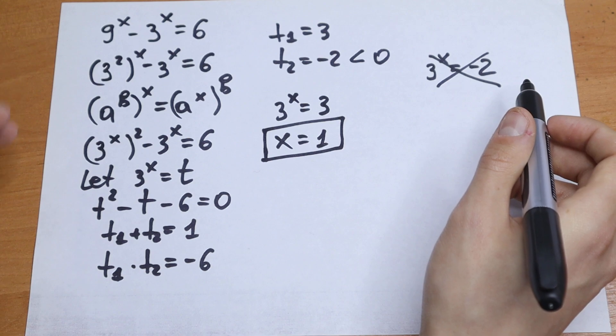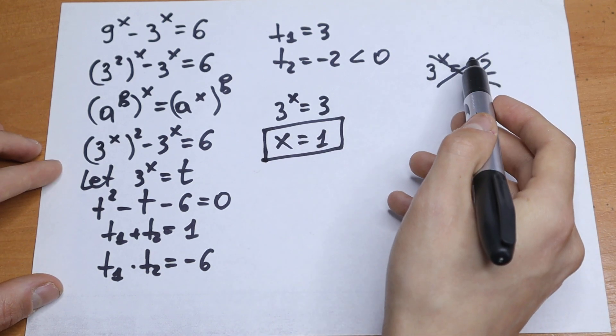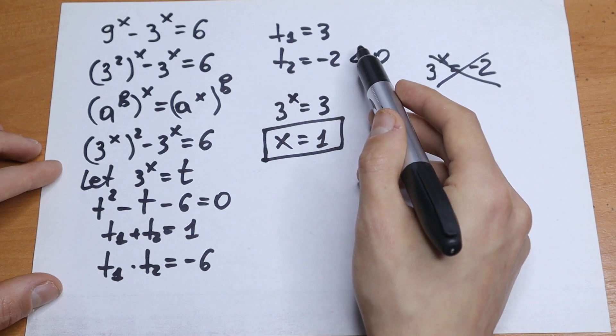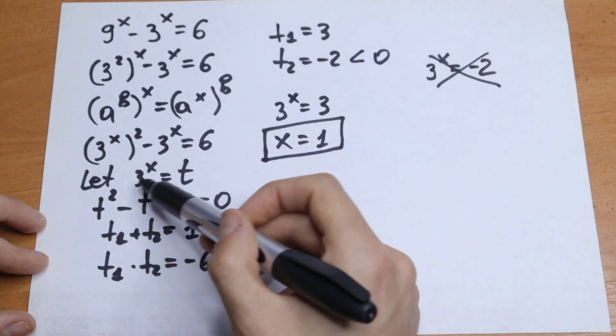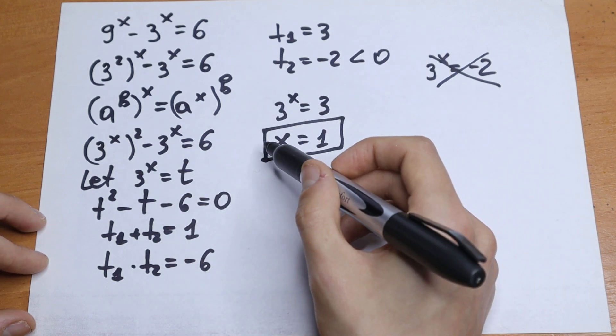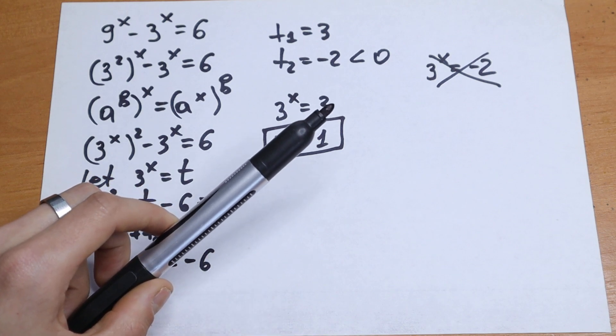If you felt this solution at the beginning of the video, this is the one and only solution. This t is not good for us because it's negative, and we don't need negative roots because we have an exponential function. Thank you for watching and see you in the next videos.